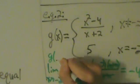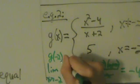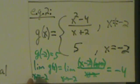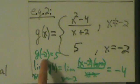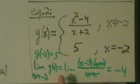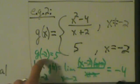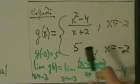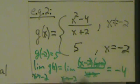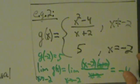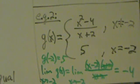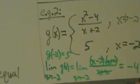But the problem is that g of negative 2 is actually 5. So what we see here is that when x is negative 2, the y value is 5. But the limit as x goes to negative 2 of g(x) is negative 4. So the function value and the limit don't agree. So this is another example of a removable discontinuity. We'll just leave it at that, and we'll talk about another type of discontinuity in the next video.